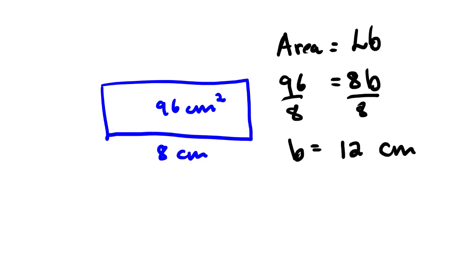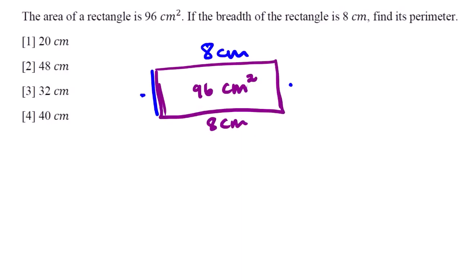According to this answer, it means that this side should be the breadth — 12 centimeters — and then this one would be 8 centimeters, because this side cannot be shorter than this one. So from here we do have all the sides: 12 centimeters, then 8 centimeters on both shorter sides, and 12 centimeters on the other longer side.